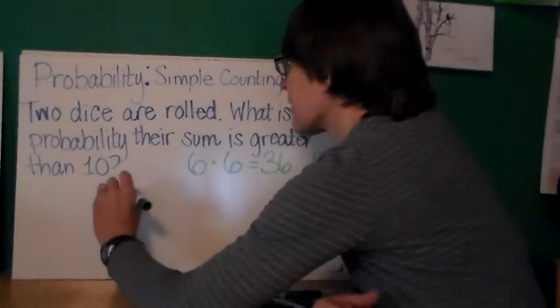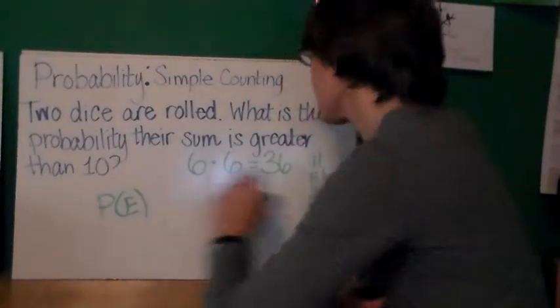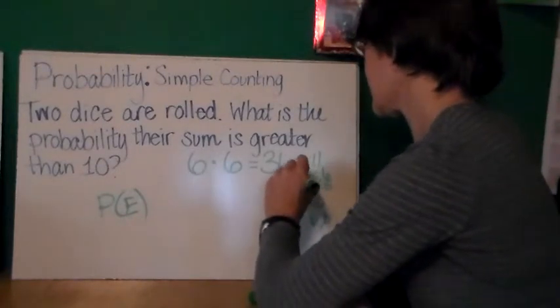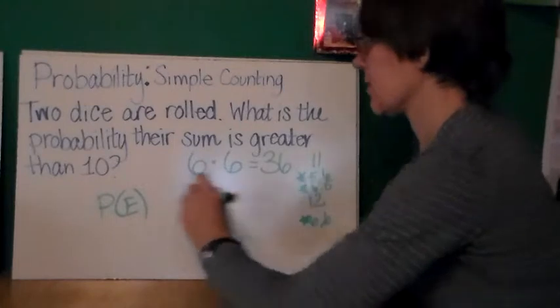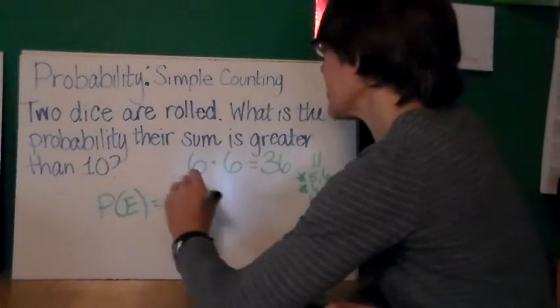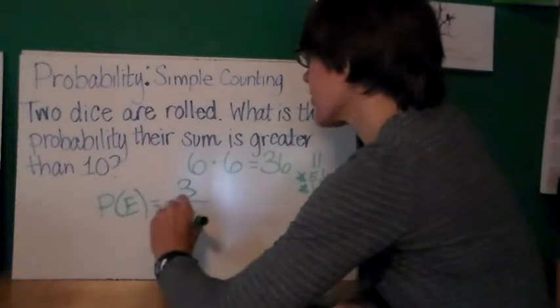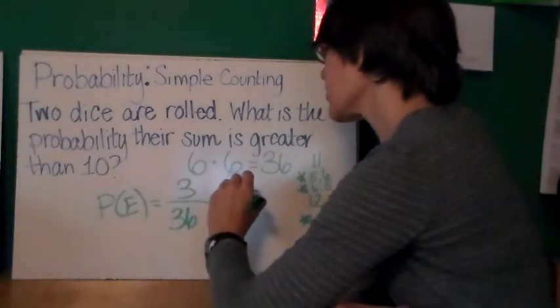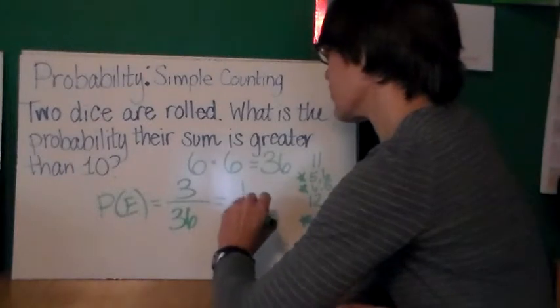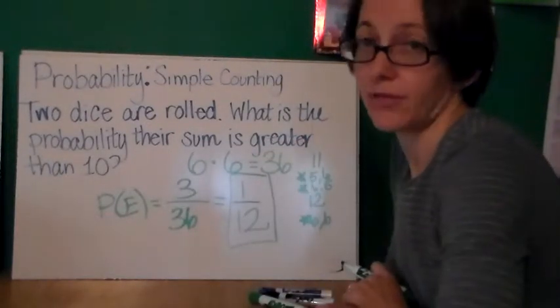So my P(E) is going to be the total number of ways that I could get what I want, sum of 11 or 12, number greater than 10, three ways that that can happen. My denominator is going to be the total number of outcomes, which is 36. I'll reduce this fraction, three over 36, to 1/12. And there's my answer.